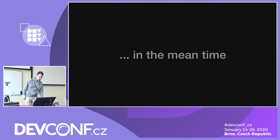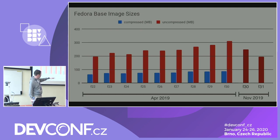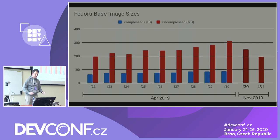In the meantime, a very nice thing happened: the base image size got smaller. You can see Fedora 30 and 31 — after the objective was in place, it actually got below 200 megabytes, which is slightly smaller than F22. Thanks to the container team in Fedora for doing this. I think it happened just because the objective was there and we talked about it. Now we have to keep it small — we can't just let it grow again.